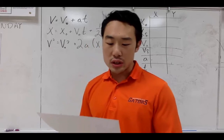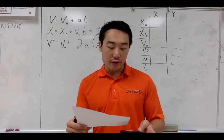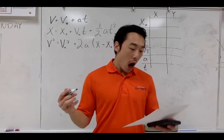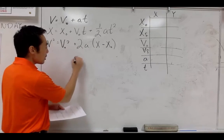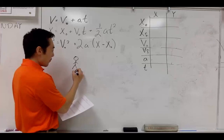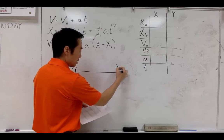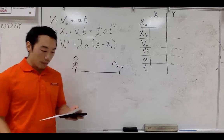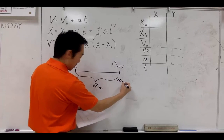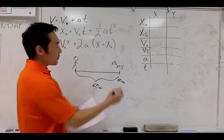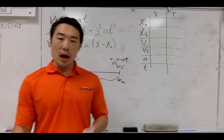Now for problem three. A dog is 60 meters away while moving at a constant velocity of 10 meters per second towards you. Where is the dog after four seconds? Let's go to the table of variables. I think it would help to draw a picture — so there's me as a stick figure, and on a number line the dog is 60 meters away. The dog is moving at a constant velocity of 10 meters per second towards you, moving in that direction. Where is the dog after four seconds?